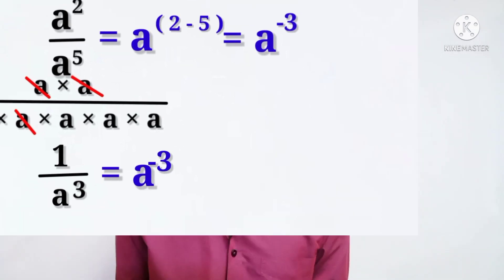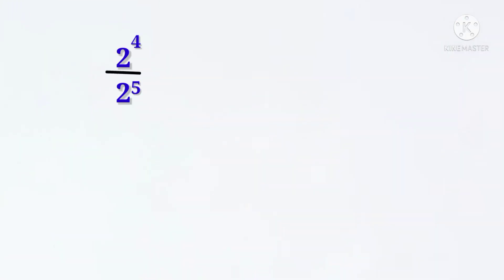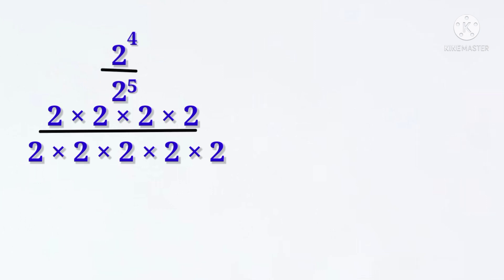In the example, to simplify: 2 to the power 4 divided by 2 to the power 5. These are two powers divided — using the rule, 2 to the power 4 minus 5 is equal to 2 to the power minus 1, which equals 1 over 2.